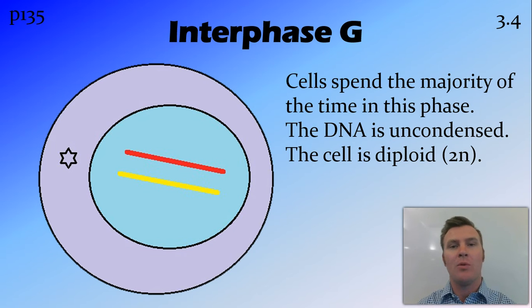The reason that it's open or uncondensed like that is so that various things can get in and read that DNA to create proteins. And cells spend the majority of time in this phase. The G stands for growth, and probably about 90% of time is spent in this interphase, which is in between the two stages or the two phases of meiosis.